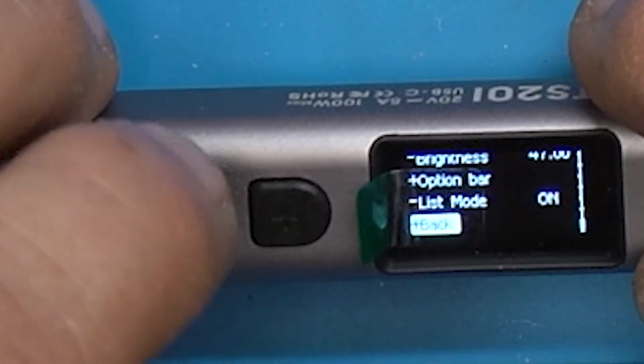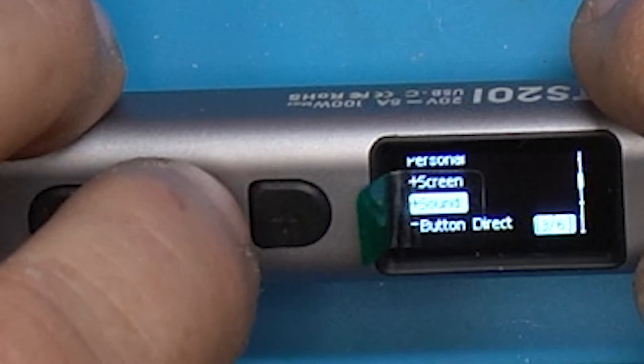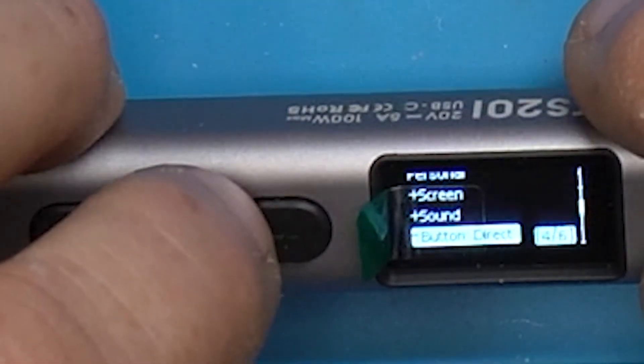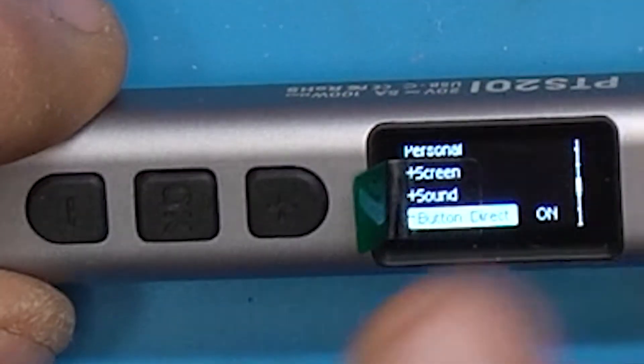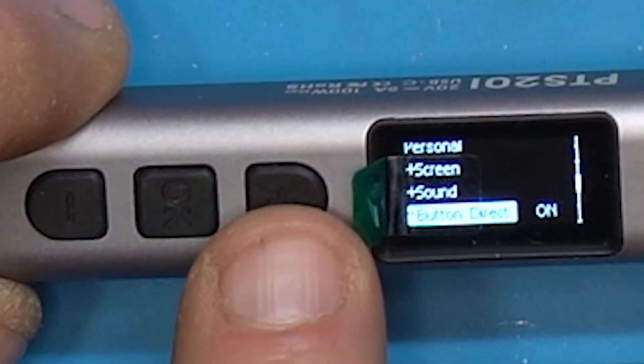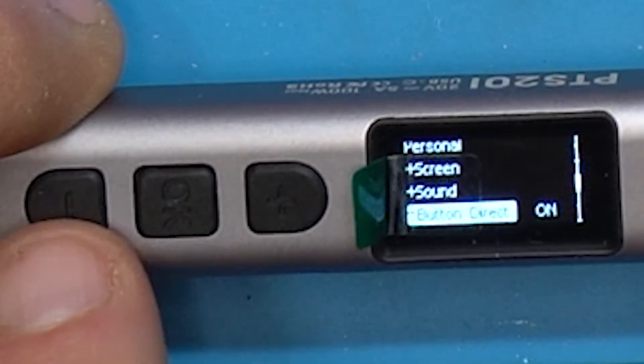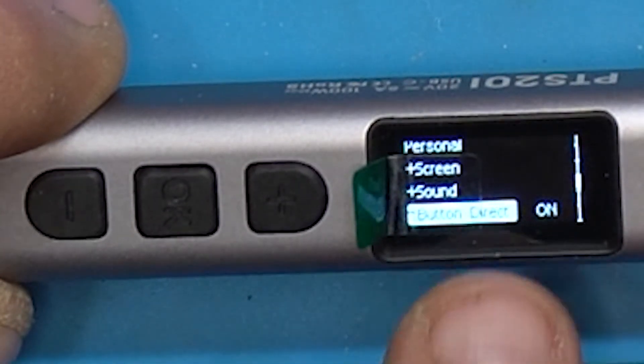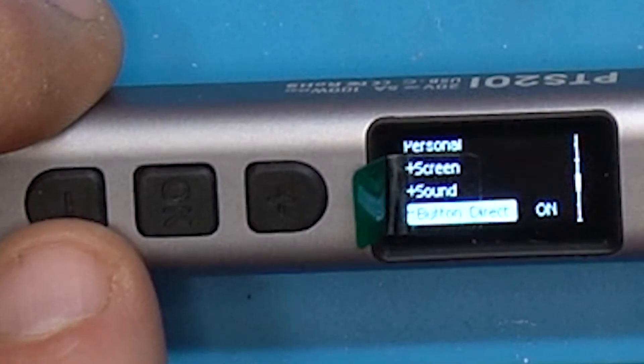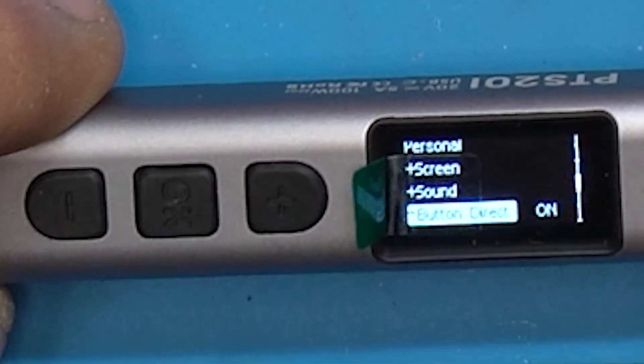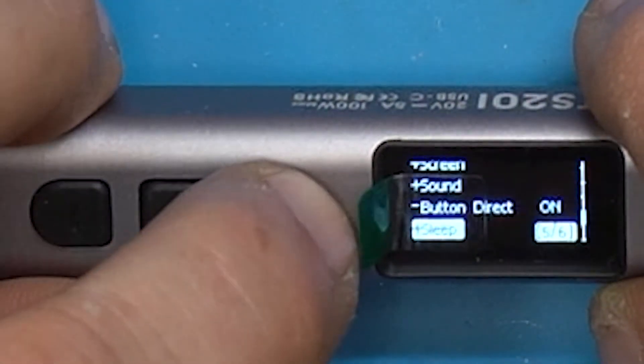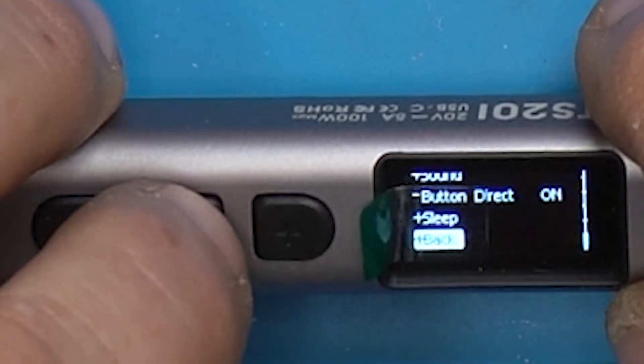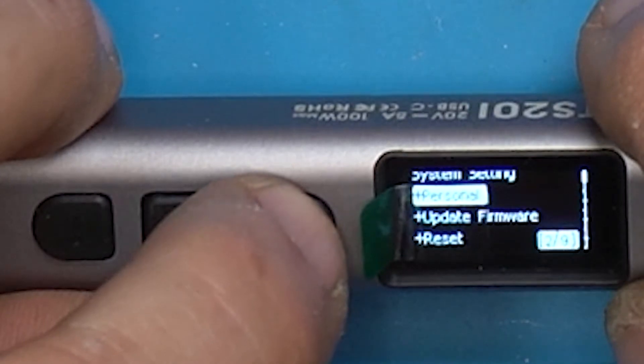Then we've got sound where we can turn the sound on and off. Button direction - I've been hitting this to go down and this to go up. It doesn't wrap around in the menu. If I select this, it'll be the opposite. Then sleep settings.